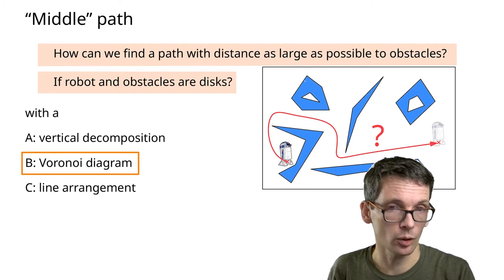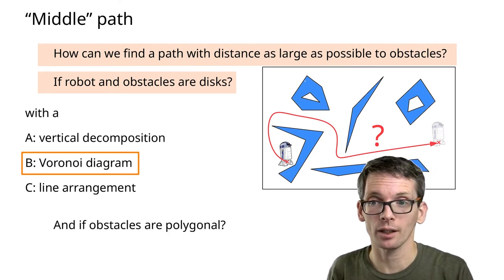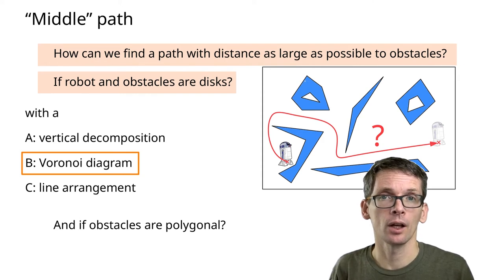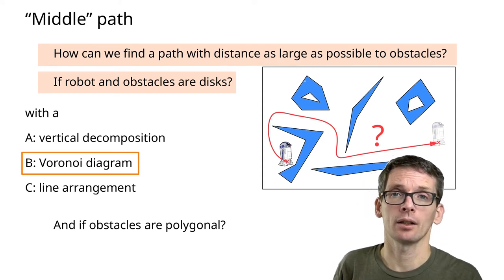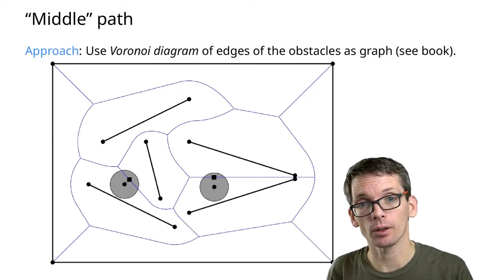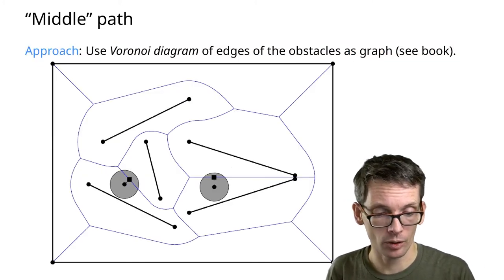It is indeed Voronoi diagrams because I can simply compute the Voronoi diagram of the obstacles and use that to compute my roadmap. Obviously obstacles so far are disks in our setting. What happens if obstacles aren't disks?